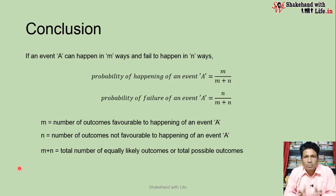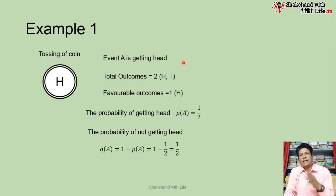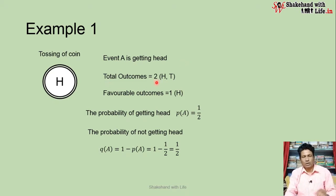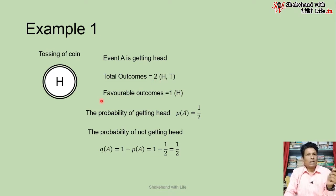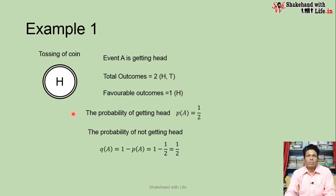Now we understand the classical definition of probability with examples. First example: tossing of a coin, where event A is getting a head. When we toss a coin, the total outcomes equal two — either head or tail. We want a head, so the favorable outcomes equal one. Therefore, the probability of getting a head, P(A), equals one divided by two.